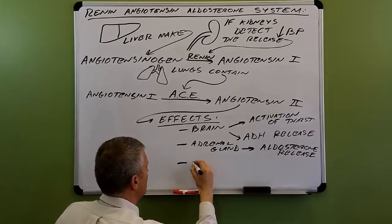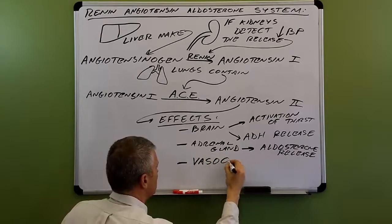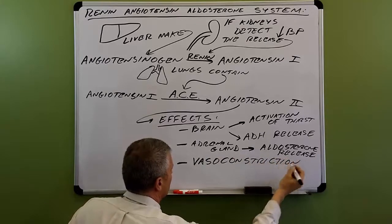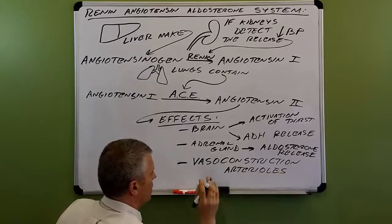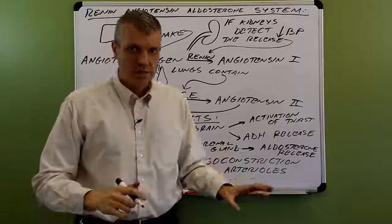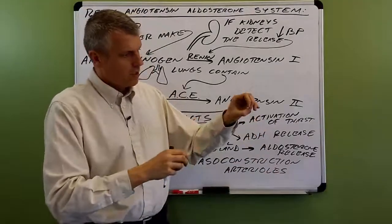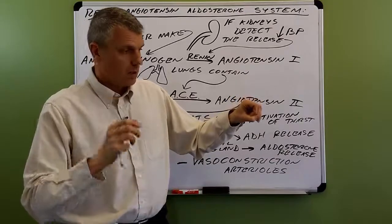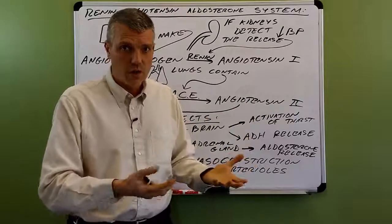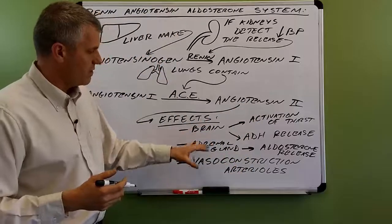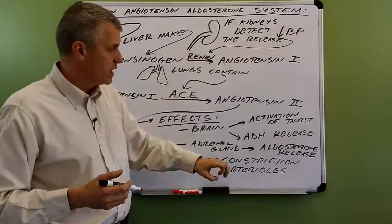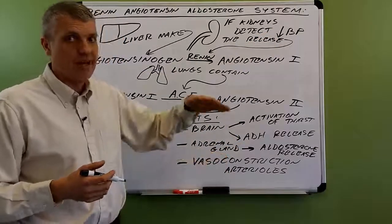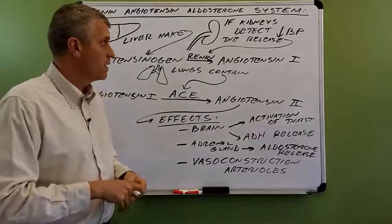The last effect is vasoconstriction, mostly affecting the arterioles. Vasoconstriction means blood moving through the blood vessels is constricted in those tubes, so the heart has to push harder and blood pressure goes up. Every one of these effects of angiotensin-2 counters the initial stimulus — a decrease in blood pressure — trying to bring blood pressure back up and keep it within its homeostatic range.